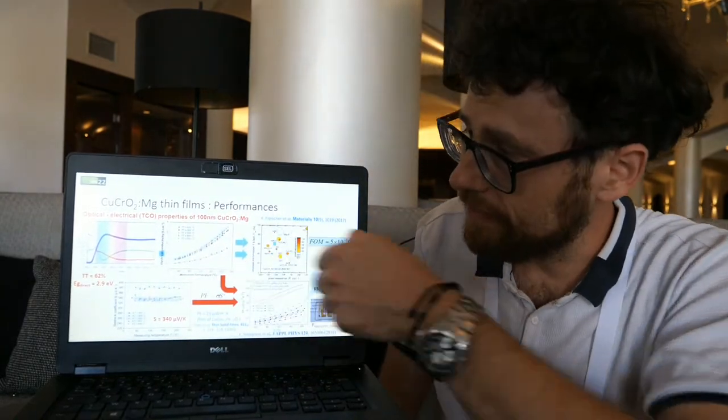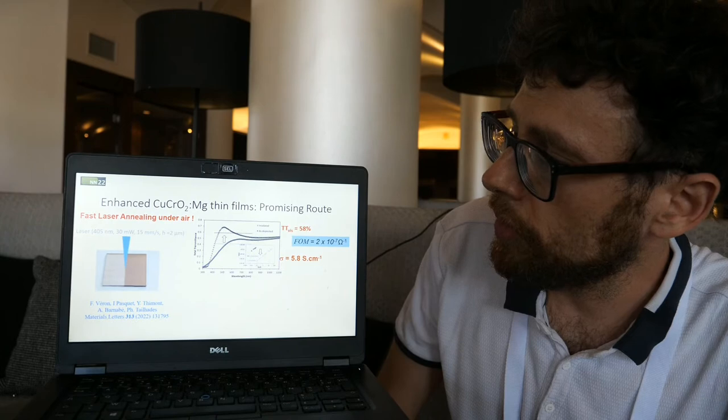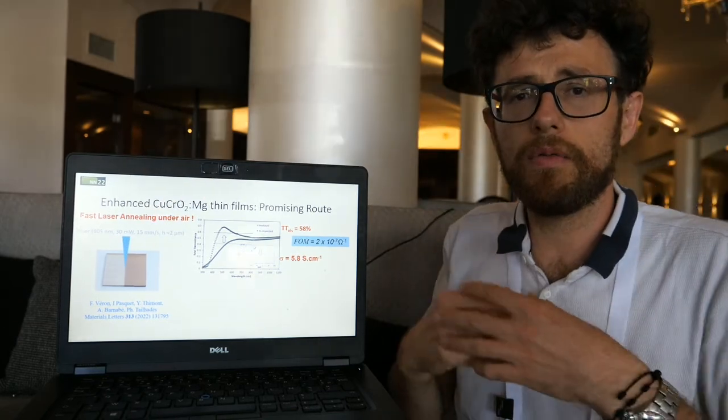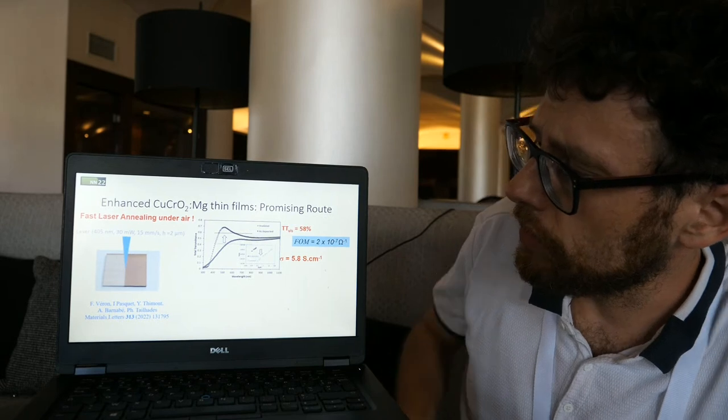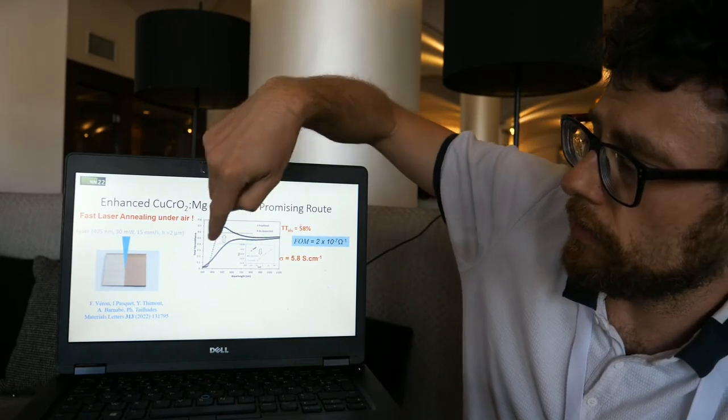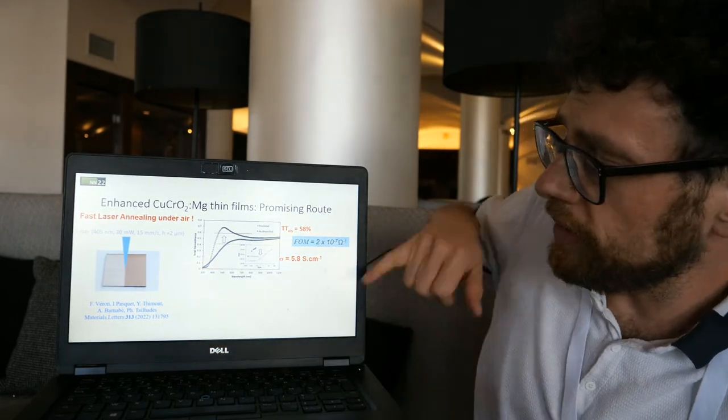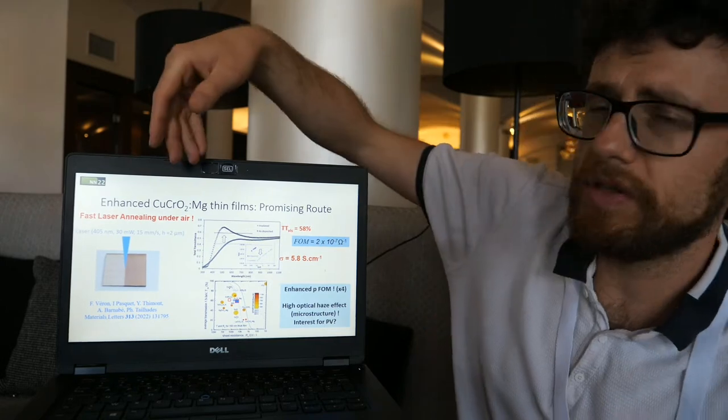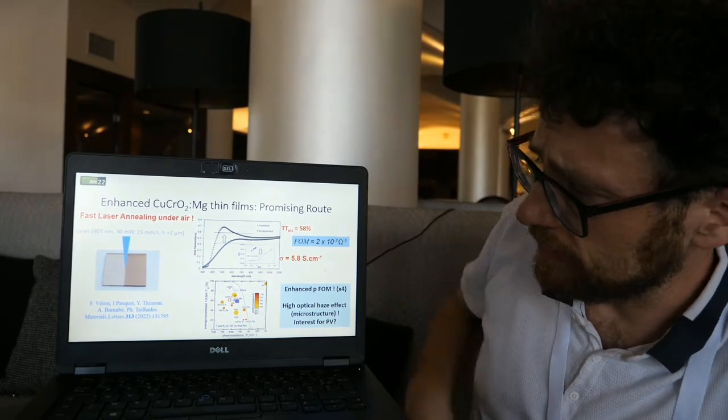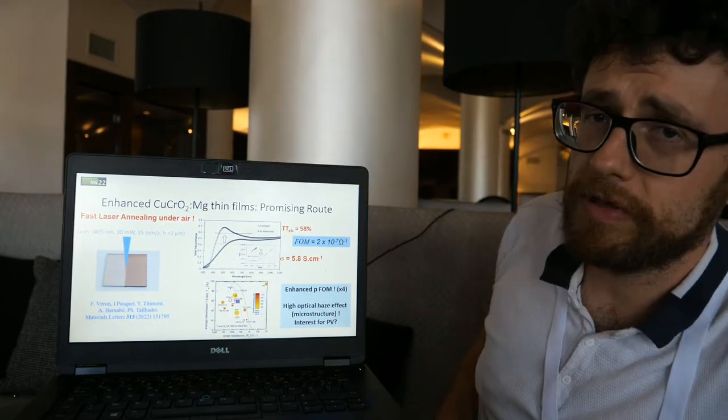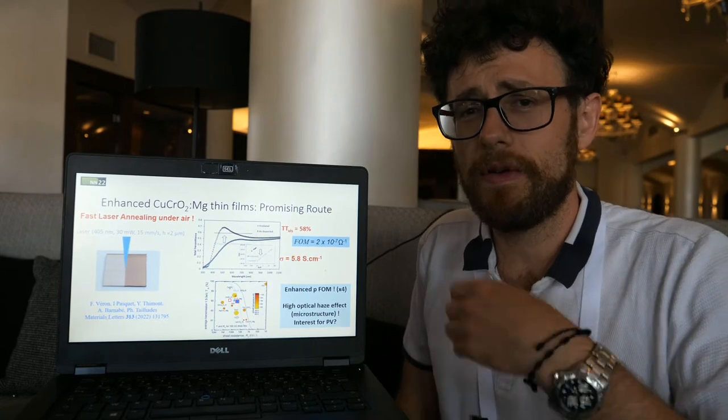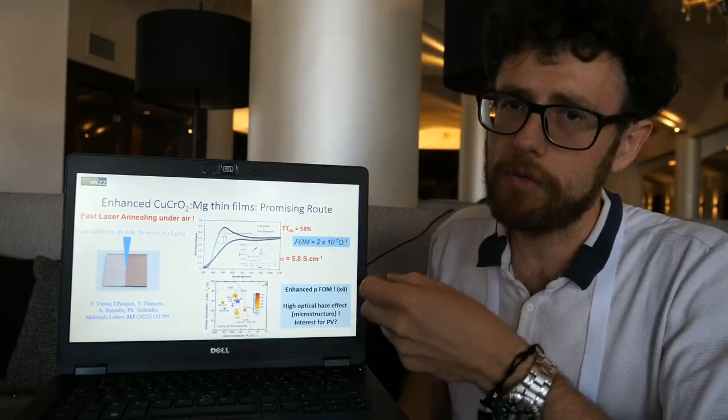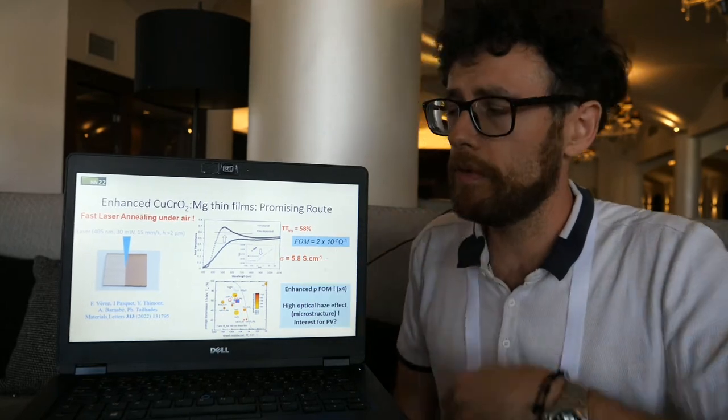We have enhanced the properties of this thin film material using laser. We can modify the properties of this material. We can have transmittance of similar value but increase a lot of electrical conductivity. It is very interesting for future applications. This type of treatment can increase the factor of merit of this transparent conductive material. It is very innovative way, very low cost, very easy, and we have very good results for P-type transparent conductive oxide through this new method.